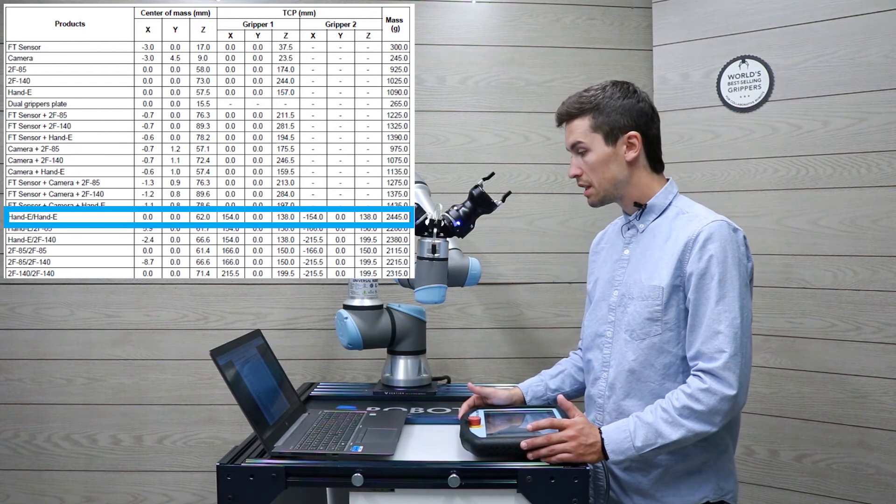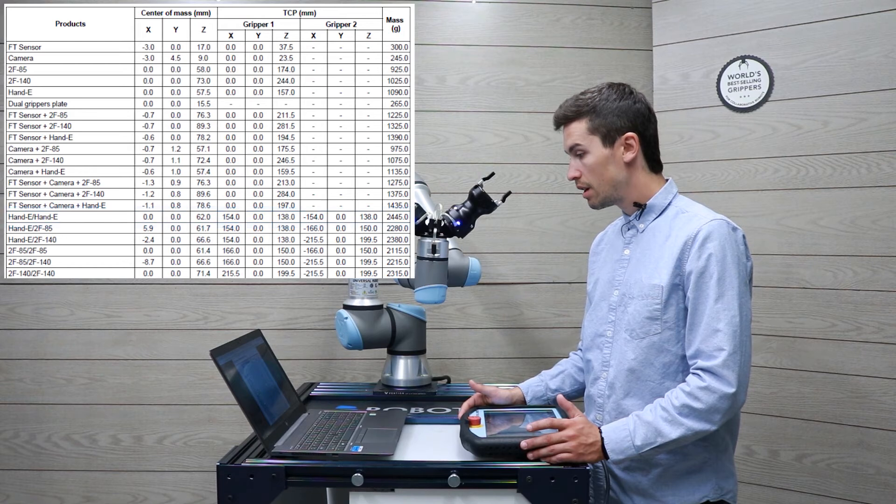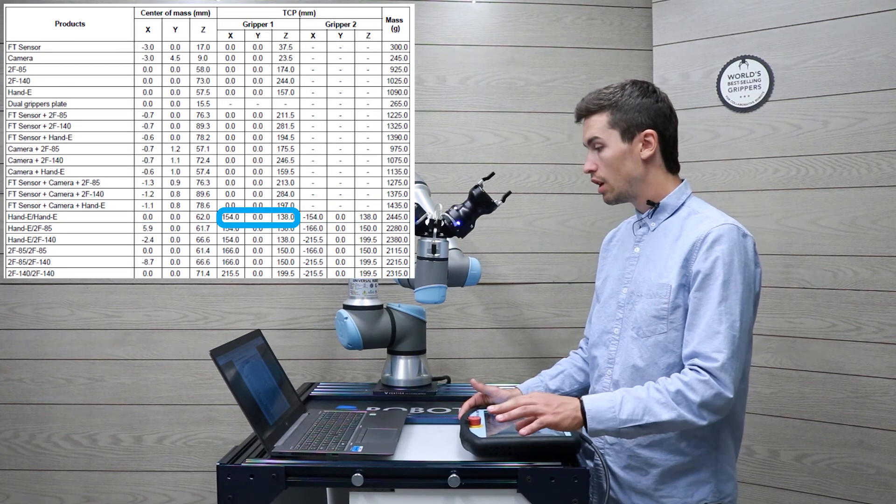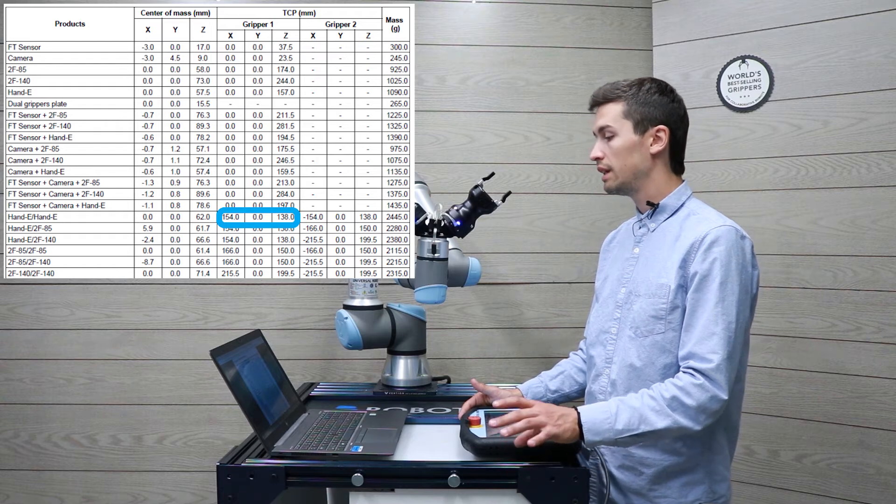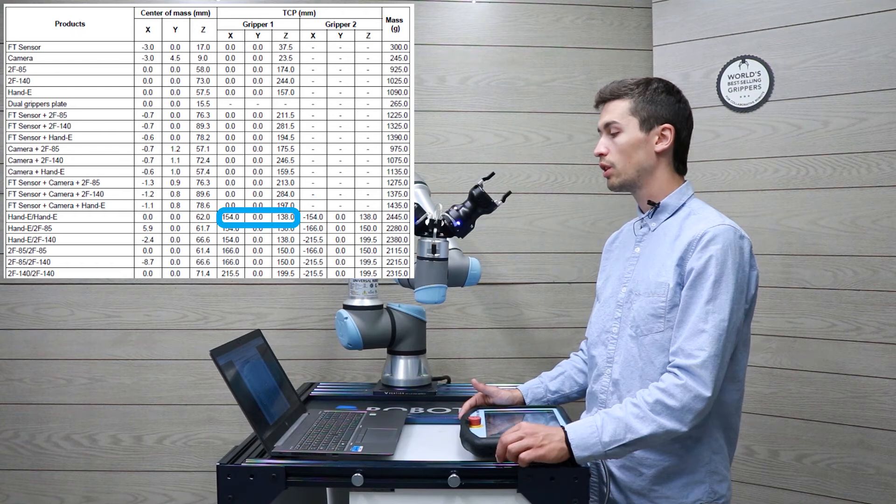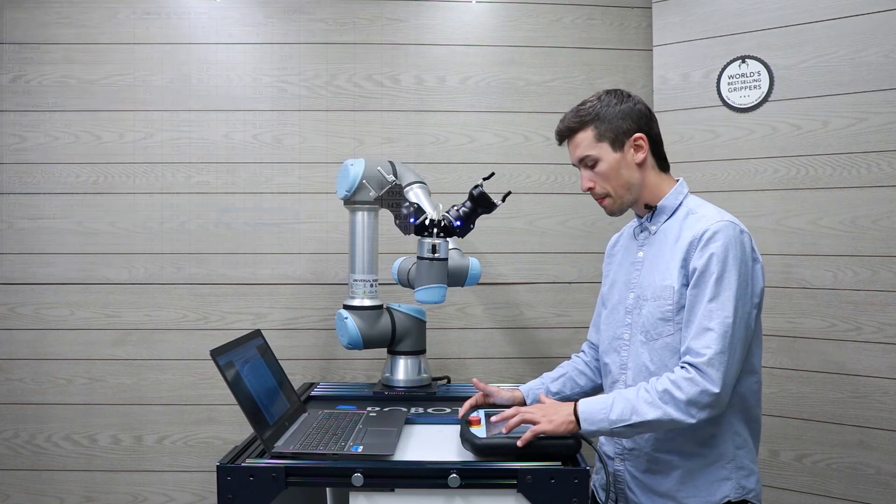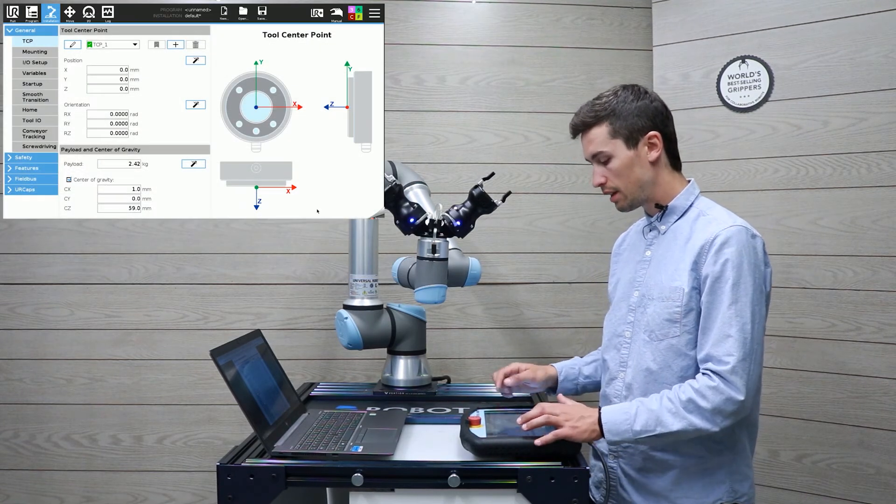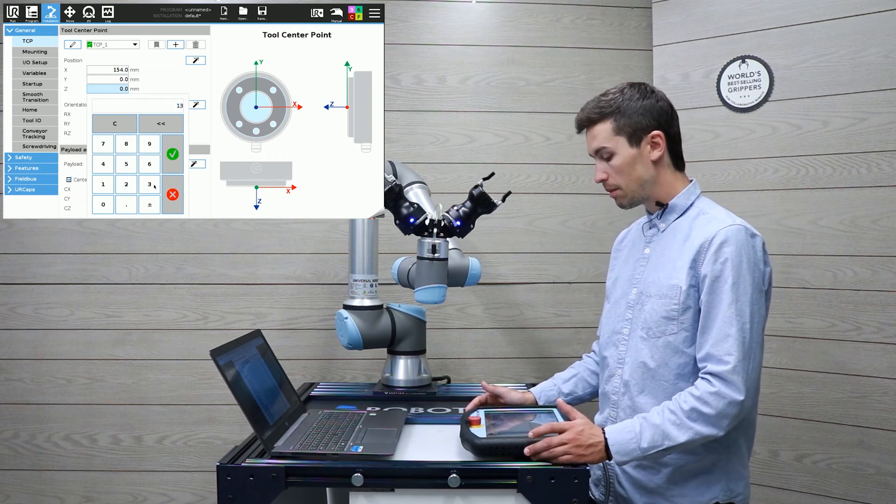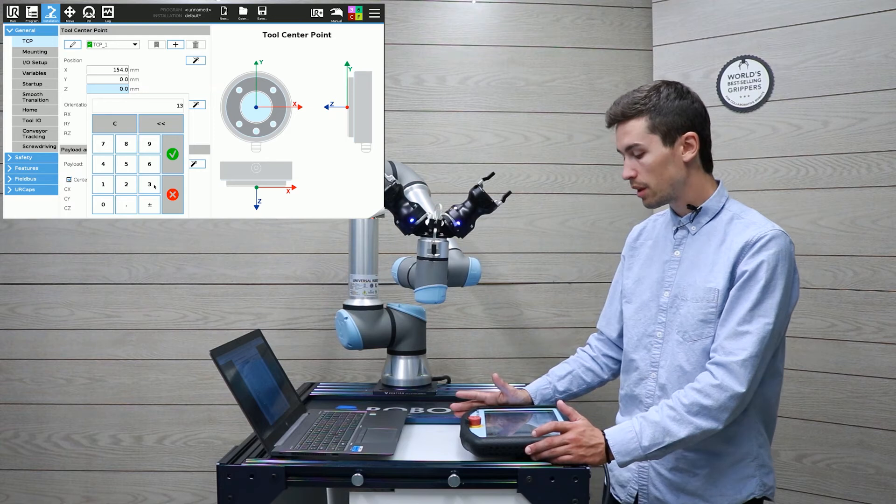So in this situation, the first gripper will have a TCP of 154 millimeter in the X direction, zero in the Y direction, and 138 into the Z direction. So I'm just going to enter that into the installation tab. So that's it for the first gripper.